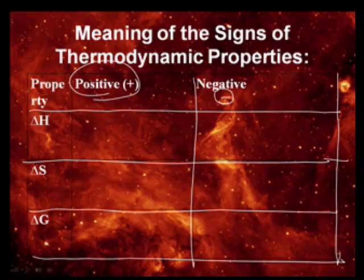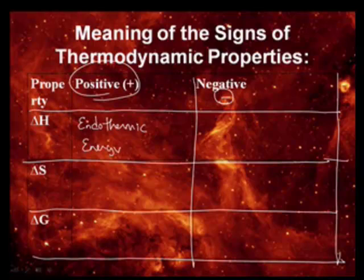If delta H is positive, what do we know about that? It's endothermic. What's that mean, endothermic? That means heat is going into the system, so energy in. And if it's negative, exothermic. You probably should know this from previous chapters. This is energy out.